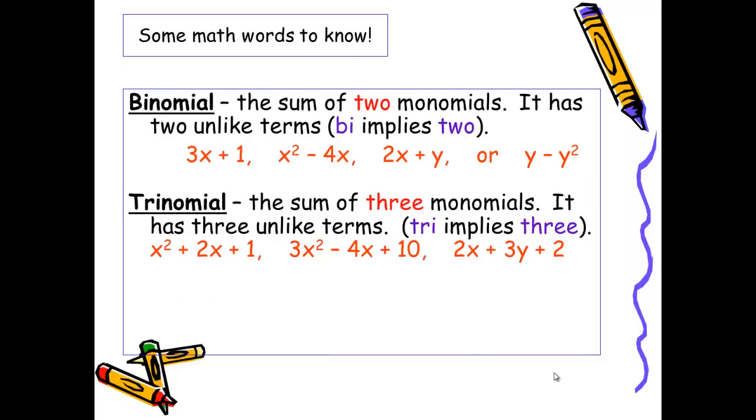A binomial refers to an expression that is the sum of two monomials. It has two unlike terms. Because just as bi means two wheels in a bicycle, it also means two terms in a binomial. Here are several examples and please include one or two of them in your notes.